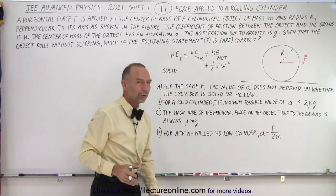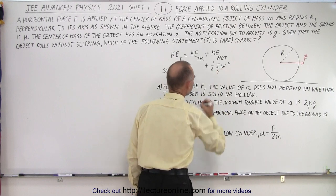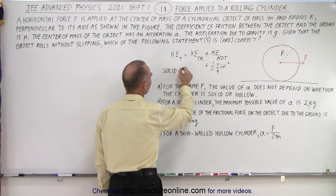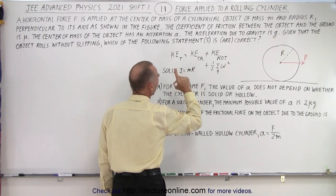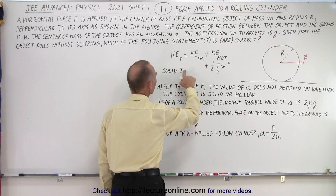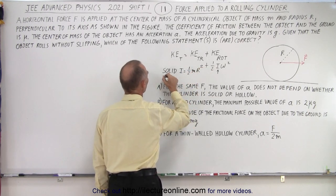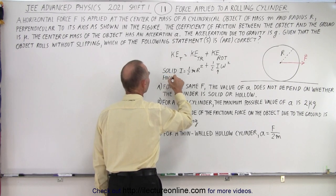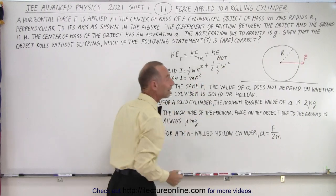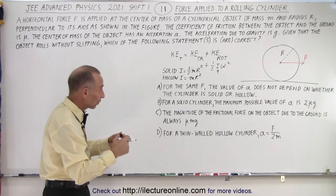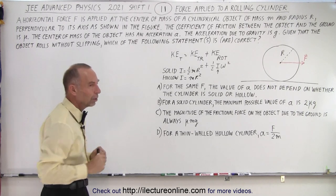And of course for a solid object, I is equal to, not MR squared, I'm talking about a solid object. For a solid object, it's equal to one half MR squared. And for a hollow object, I is equal to MR squared. So you can see that the kinetic energy rotational, the rotational kinetic energy, depends upon whether or not the object is solid or the object is hollow.